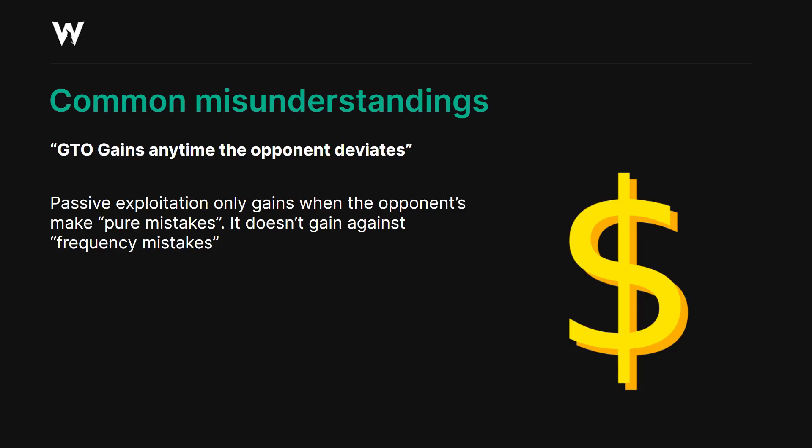Exploitative players might have misunderstandings, but so do GTO players. A lot of GTO players believe the myth that GTO gains any time the opponent deviates — this concept of passive exploitation, meaning your fixed GTO strategy gains simply because your opponent isn't also playing GTO. However, it's important to realize that GTO only gains against certain types of mistakes. We call these pure mistakes. It does not gain any money from frequency mistakes. Your opponent can deviate from the GTO strategy and it won't make you money — and in fact, given enough rake, it can actually cost you money in some spots.